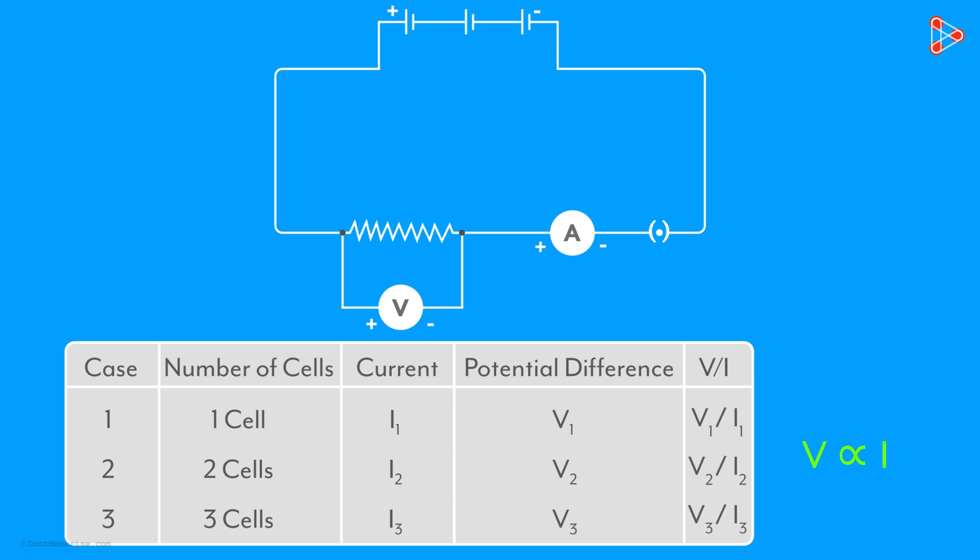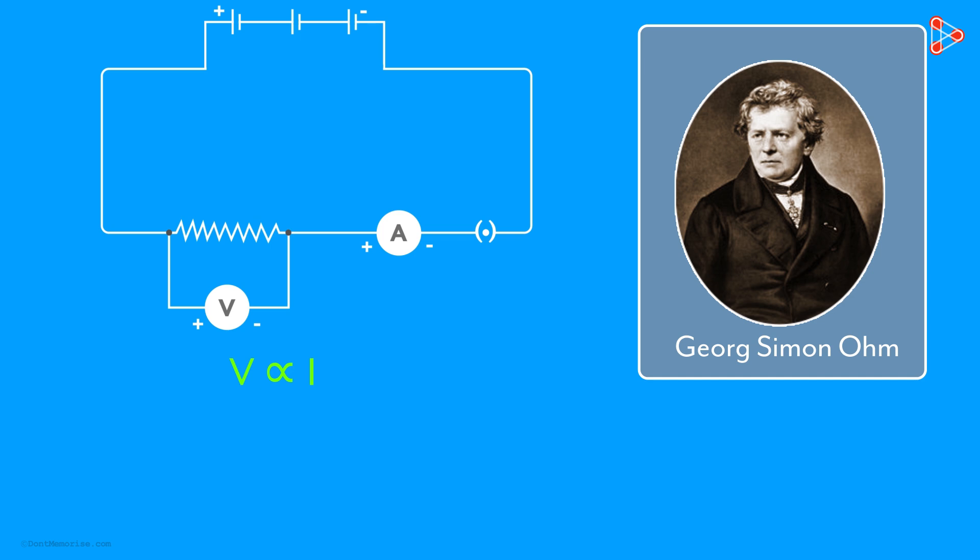This relationship was discovered by a German physicist, Georg Simon Ohm in the year 1827. Notice that the resistance here is constant and we also assume that all other factors including temperature are also constant. This is Ohm's law.